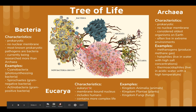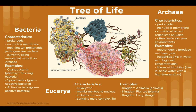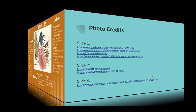The last, but certainly not least, are eukarya, which are eukaryotic, have a membrane-bound nucleus, include us as humans, and contain more complex life. Examples are the kingdom Animalia, which are animals; kingdom Plantae, or plants; and kingdom Fungi, which are fungi.